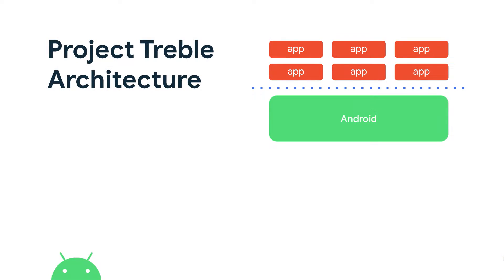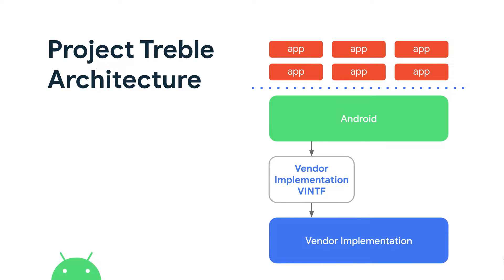But first, a bit of background on Project Treble, which makes this possible. When you look at Android from the point of view of an application, there's a bunch of apps that talk to the operating system via stable interfaces — that is what we call the SDK API, this is the dotted blue line. And they talk to what we refer to as the Android framework, or the Android system image. What we did with Project Treble is we made sure to establish that system image on a stable foundation on top of a vendor implementation, which is specific to the actual mobile CPU and hardware that your phone has.